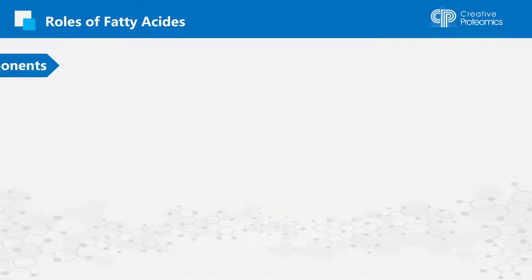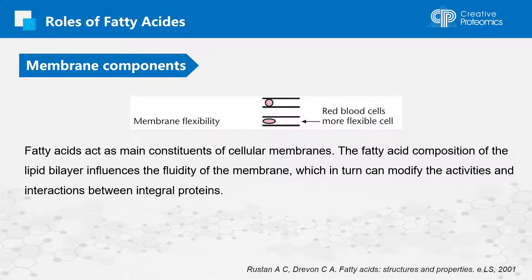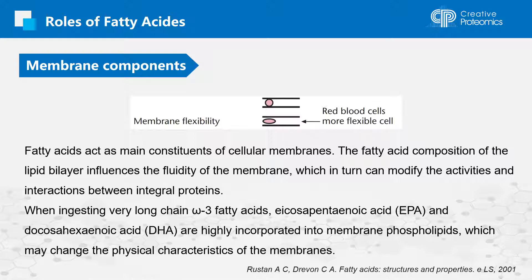Fatty acids can act as main constituents of cellular membranes. The fatty acid composition of the lipid bilayer influences the fluidity of the membrane, which in turn can modify the activities and interactions between integral proteins. When ingesting very long chain omega-3 fatty acids, eicosapentaenoic acid and docosahexaenoic acid are highly incorporated into membrane phospholipids, which may change the physical characteristics of the membranes.